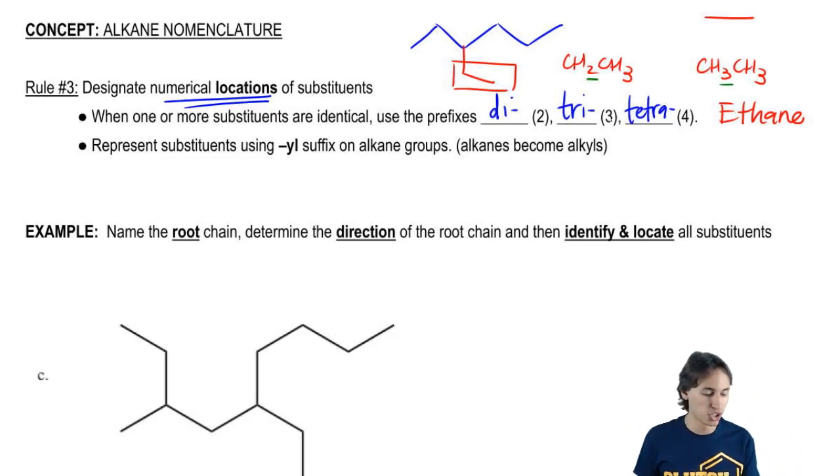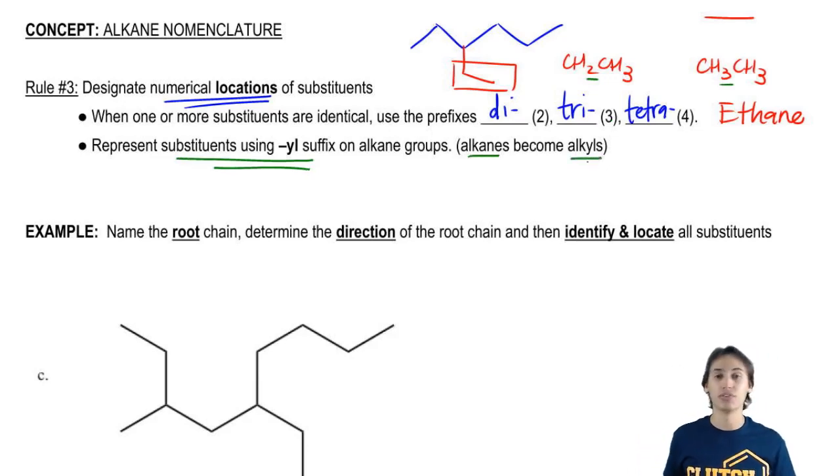Instead, what we're going to do is we're going to represent it using a YL suffix. So basically, alkanes become alkyls. And I told you guys this already earlier when we were talking about functional groups that if you have a chain coming off, you put a YL suffix for the alkane.